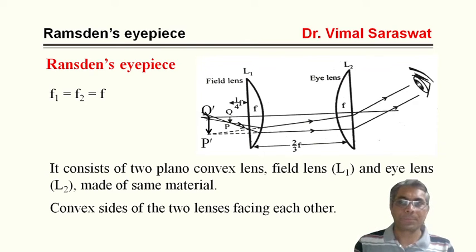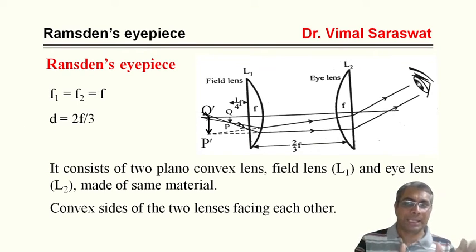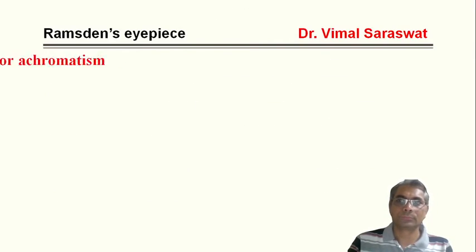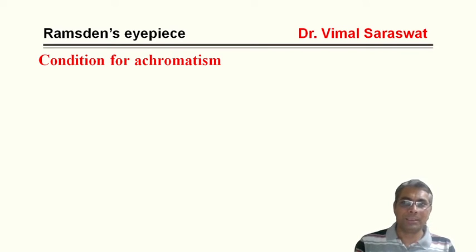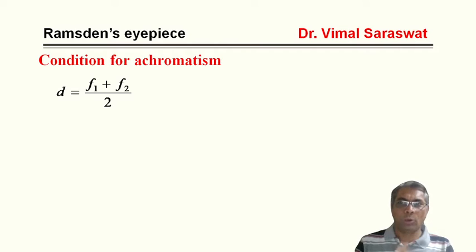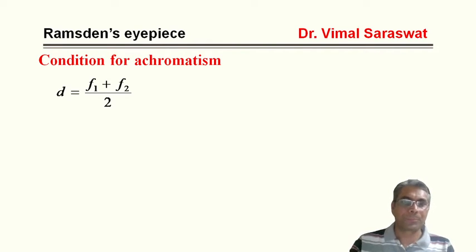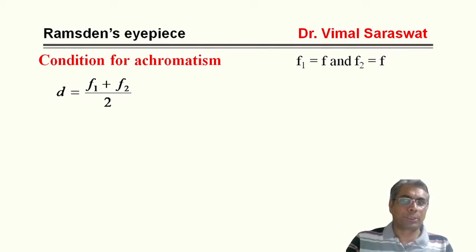The focal length of both lenses is the same, that is f, and the distance between the two lenses is 2/3 f. The condition for achromatism is d = (f1 + f2)/2. Since f1 = f and f2 = f, we get d = (f + f)/2, that is d = f.